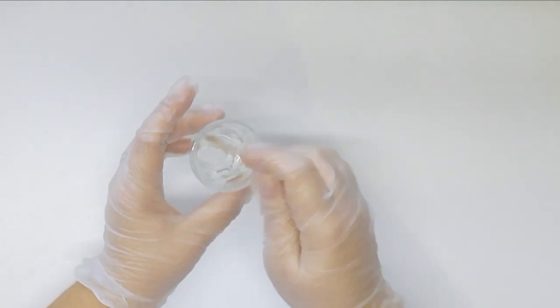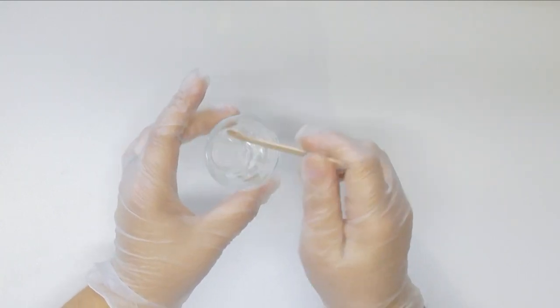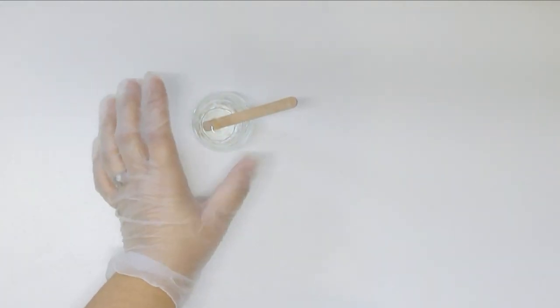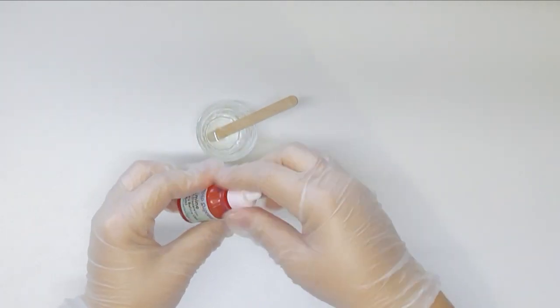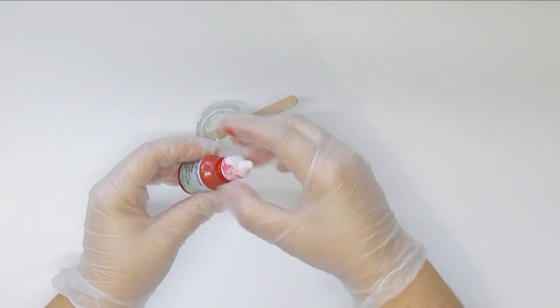So my little one here is melted down and it took no longer than that 10 seconds. What I'm going to do with the clear is add in some red liquid dye, and this is Carmine from Aussie Soap Supplies.